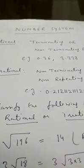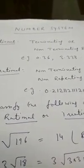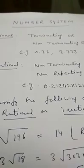Rational, for example, 0.36, it is terminating, or 3.333, non-terminating and repeating.